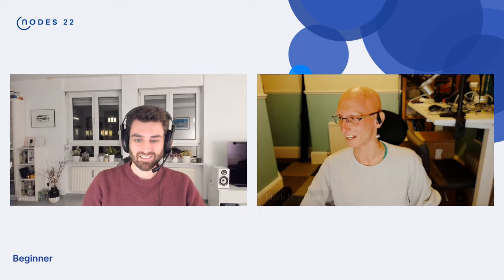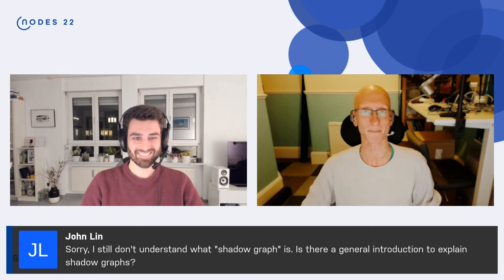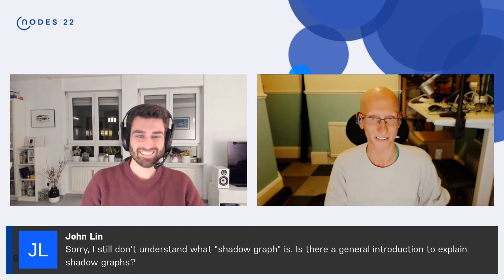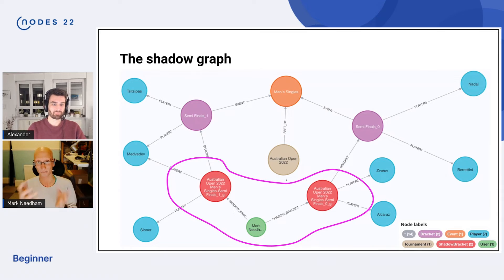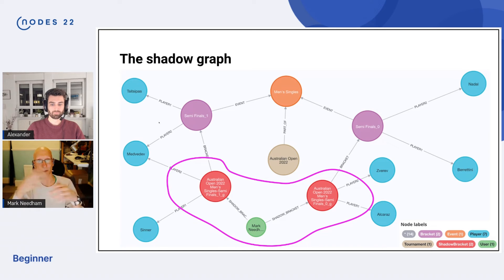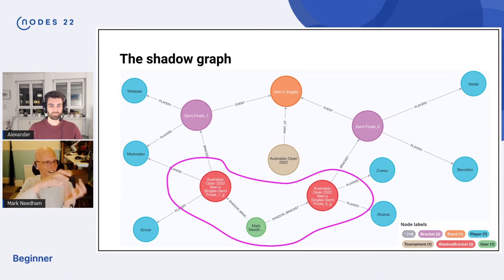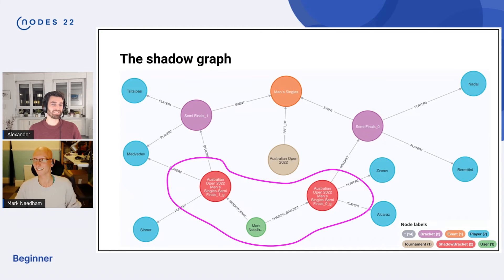Q: I don't understand what a shadow graph is — is there a general introduction? A: No, because I just made up the term. In this domain model, the bracket is who actually got to a particular position in the draw — that's the actual data. We then layer on top of that: Alex can have his version, I can have mine, Michael can have his. We're effectively creating a shadow copy of it, and there can be lots of copies. Maybe there's a better name — it could be called a digital twin. Maybe I should have called it the bracket twin.